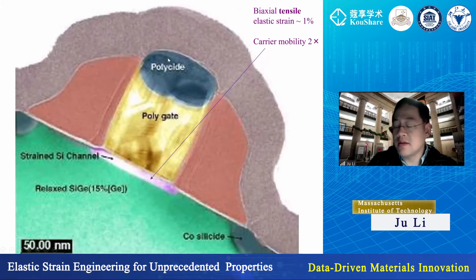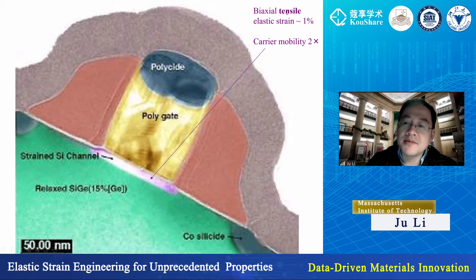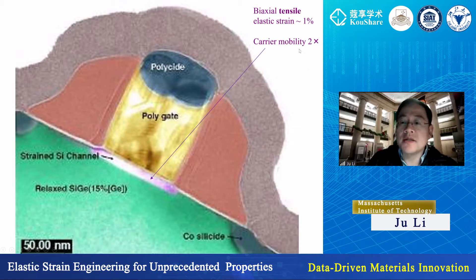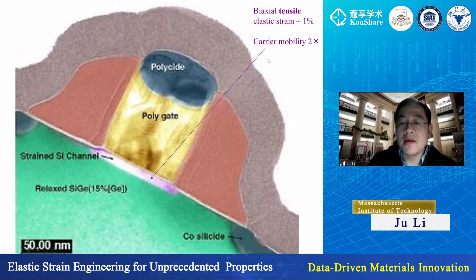A powerful example is so-called strained silicon technology, in everybody's laptops and cell phones, where people epitaxially grow pure silicon on a silicon-germanium alloy. You can apply about 1% biaxial strain on a 10-nanometer-wide silicon channel. Using that, you can improve electronic carrier mobility by a factor of two. This is one of the most important non-geometric scaling effects, delaying the breakdown of Moore's law. It's already in commercial scale.